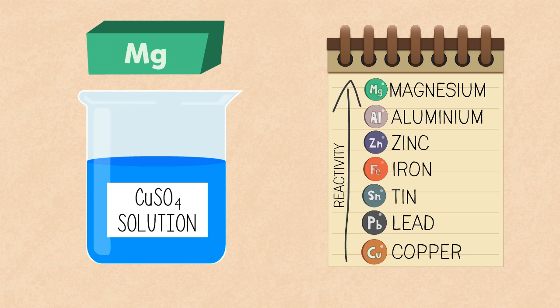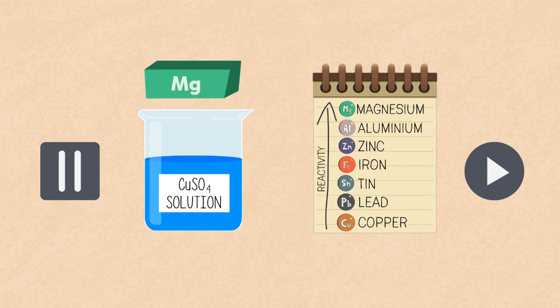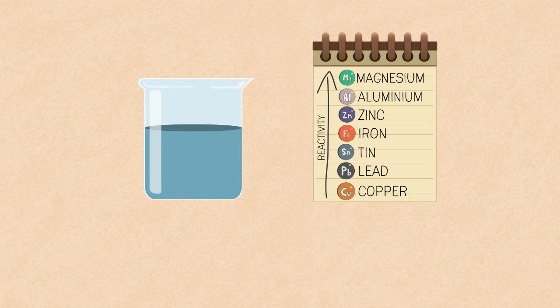So, if you were to add magnesium, what do you think would be formed? Pause the video, write a chemical equation and check the answer when ready. The answer is shown here.